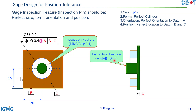The checking pin must satisfy four requirements: perfect size (exactly 4.4, with very small gauge tolerance that can be neglected), perfect form (a perfect cylinder — round and straight), perfect orientation (perpendicular to datum A surface), and perfect position (perfectly located to datum B and datum C). So we need to establish datum B and datum C on the gauge.